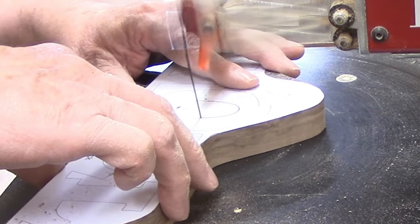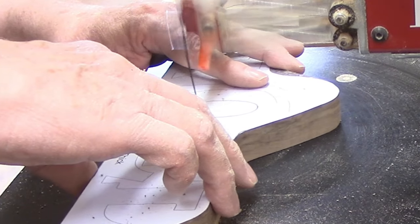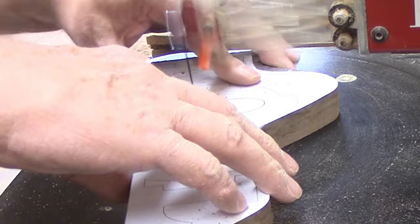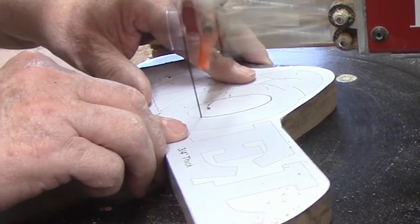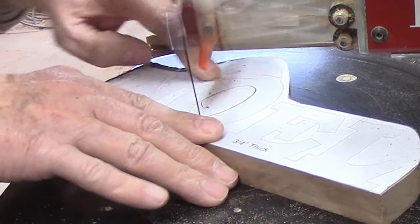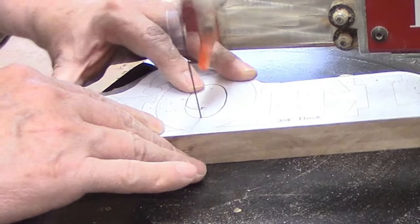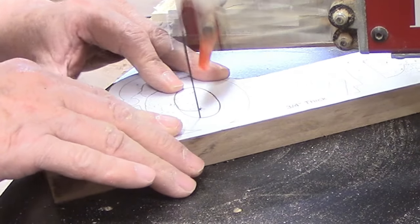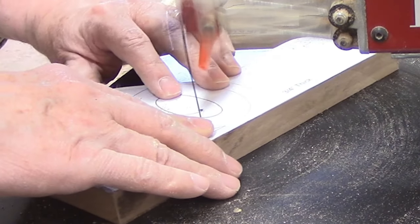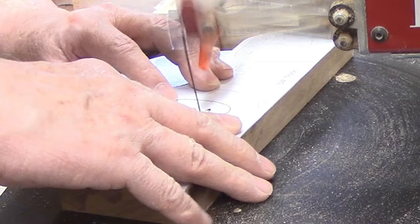I almost always make inside cuts first and that's what I did here. I drilled pilot holes for the two interior cuts using my drill press but you can use a hand drill if you don't have a drill press. Cutting the center from the O in Noel is simply a matter of cutting from the pilot hole to the line then following the line around to cut out the oval shape.